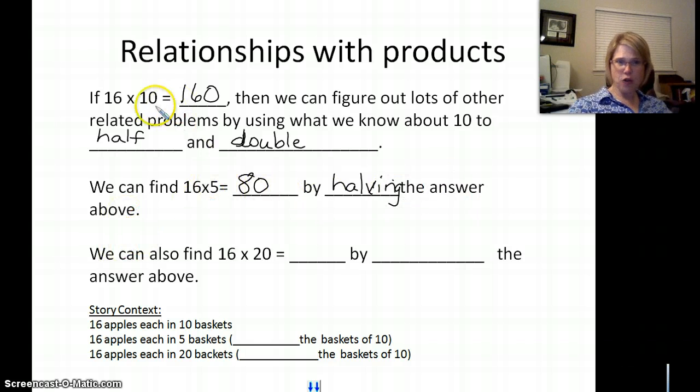Just like taking 5 groups from 10, we can also take 20 groups by using what we know, the relationships with 10. We can also find 16 times 20, and we know that's 320. How do we know that? We doubled it. By doubling the answer above.